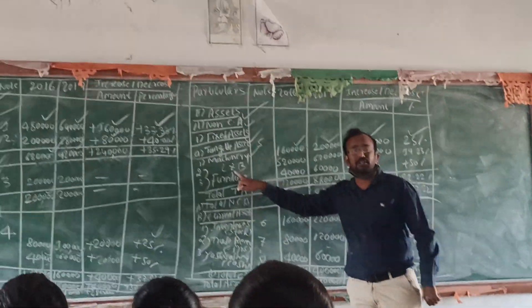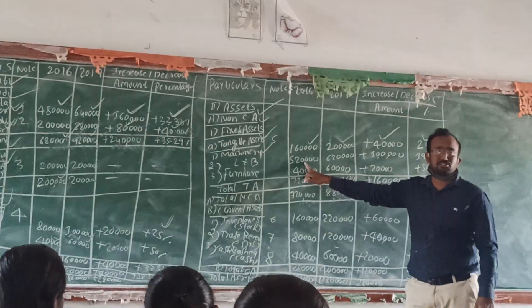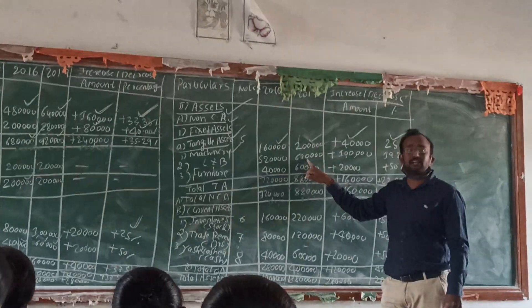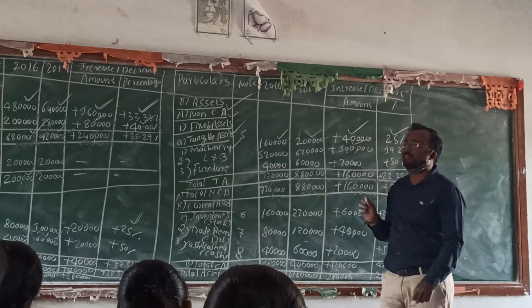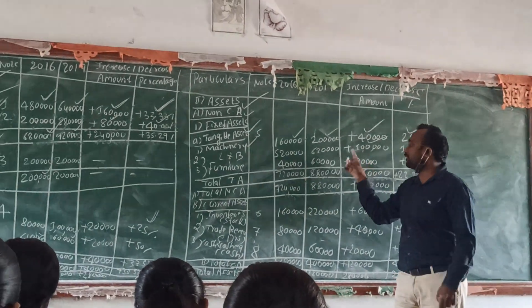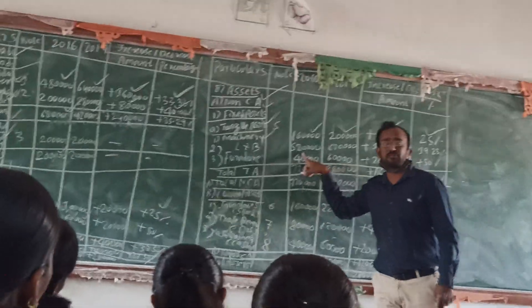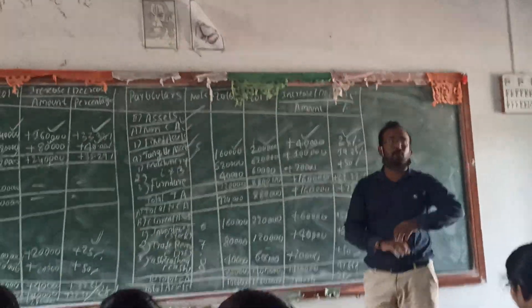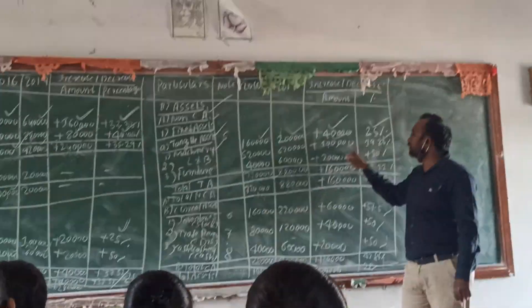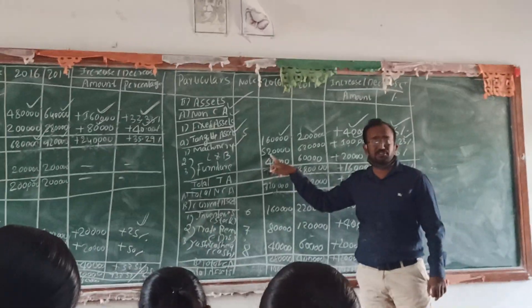The second information is land and building: first year is 5,20,000 and second year is 6,20,000. So the increasing amount is 1,00,000. How do we get 1,00,000? 6,20,000 minus 5,20,000. The percentage is 19.23, which is 1,00,000 divided by 5,20,000 into 100.